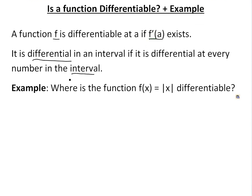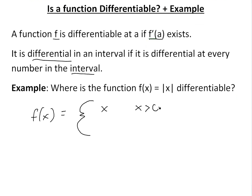Now to help illustrate this concept, I'll look at this example: where is the function f equals absolute value of x differentiable? First, recall with absolute values, it always has to be positive. So we can break it up into two functions and write it in a bracket. It equals x whenever x is greater than zero — for example, absolute value of two is just two, so we leave it as x.